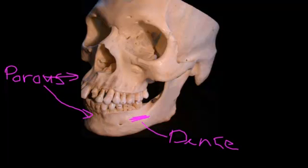So now let's think about where these nerves run, because that's going to make the critical decision as to where you put the tip of the needle when you're giving local anaesthetic. The first nerve we're going to talk about is the infraorbital nerve, which comes out through the infraorbital foramen.